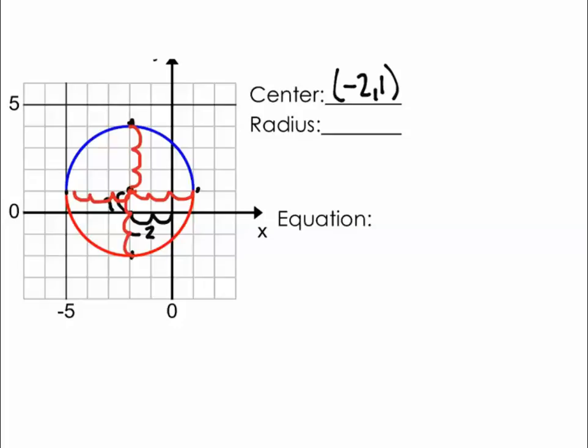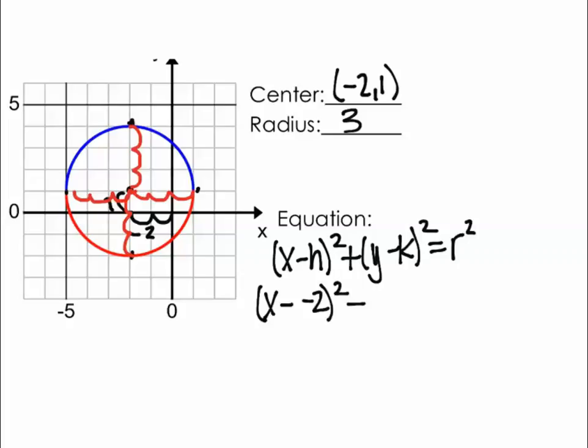So now if we think about our formula, the general equation, we have x minus h squared plus y minus k squared equals r squared. If we go ahead and plug in our h and our k, we would have x minus negative 2 squared plus y minus 1 squared equals 3 squared.